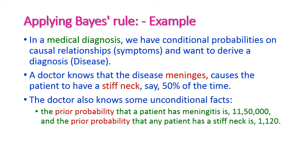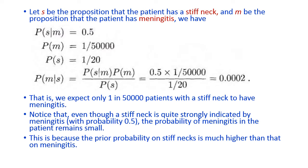The probability of having a stiff neck given meningitis is 0.5. The doctor also knows some unconditional facts: the prior probability that a patient has meningitis is 1 in 50,000, and the prior probability that a patient has a stiff neck is 1 in 20. With this data, we want to find the probability of meningitis when a patient has a stiff neck.